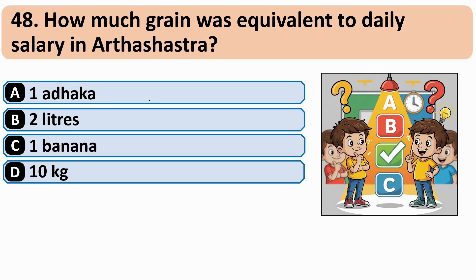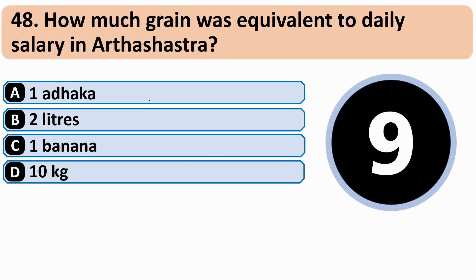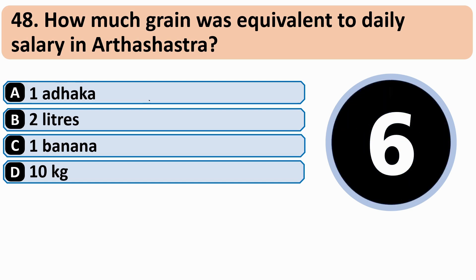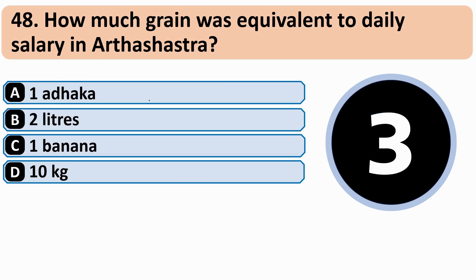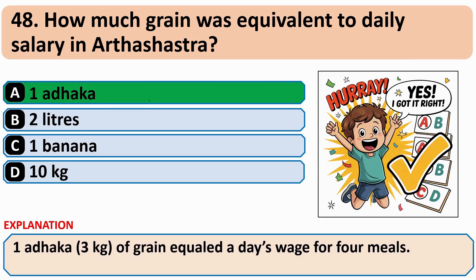How much grain was equivalent to a daily salary in Arthashastra? The correct answer is A — 1 Adaka.